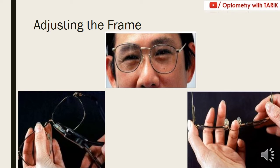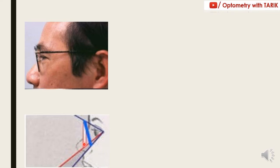The next point is pantoscopic tilt. The frame selected for a progressive addition lens should have a proper pantoscopic tilt, because pantoscopic tilt will increase the field of near vision. A straight frame will reduce it by 5 to 6 degrees, whereas giving a pantoscopic tilt will increase the near field of view by around 5 to 6 degrees or more, depending on the degree of tilt applied.